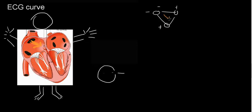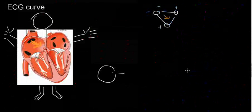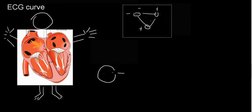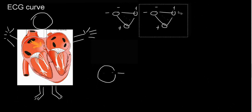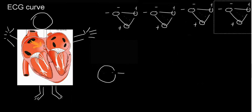The vector for atrial depolarization is pointing in that direction. Because it's going towards the positive, I'm going to have an upstroke — it's going to go up slightly and then stop.